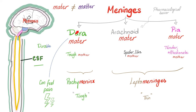The meninges: you have the dura mater, arachnoid mater, and pia mater — 'mater' meaning mother. CSF is in the subarachnoid space, between the arachnoid and the pia. Dura is the outermost, pia is the innermost.